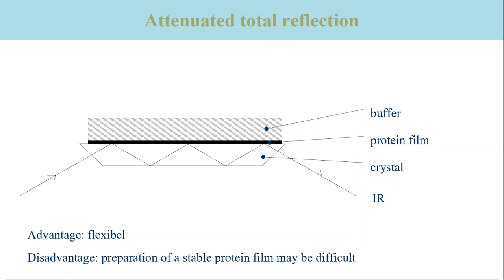The advantage of the method is that the buffer often can be exchanged without disturbing the film. This enables many sample manipulations and makes the method quite flexible. The disadvantage is that the preparation of the film is often difficult and sometimes impossible. Sometimes the film detaches when the buffer is exchanged. Kinetic measurements are possible only for reactions that proceed on the minutes time scale or slower.